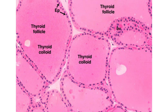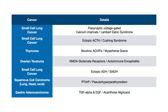In these types of questions where you're dealing with paraneoplastic syndromes, this table is going to be your highest yield findings. You see a lot of lung cancers here — small cell lung cancer and squamous cell carcinoma, which can be in the lung as well as elsewhere. We also see thymoma, teratoma, and gastric adenocarcinoma.